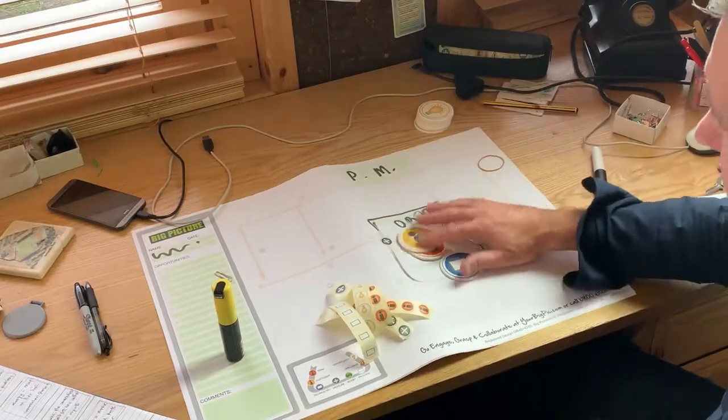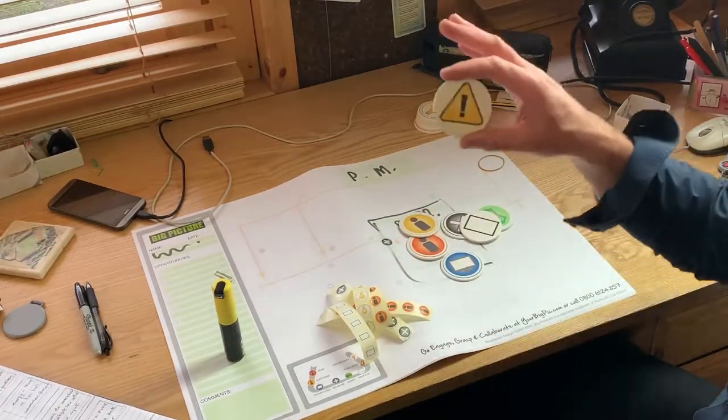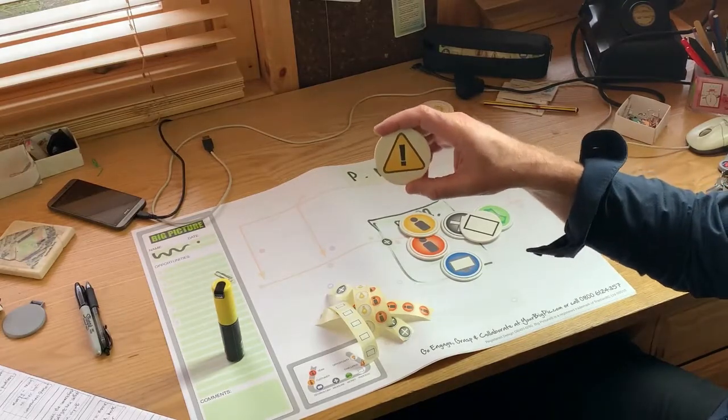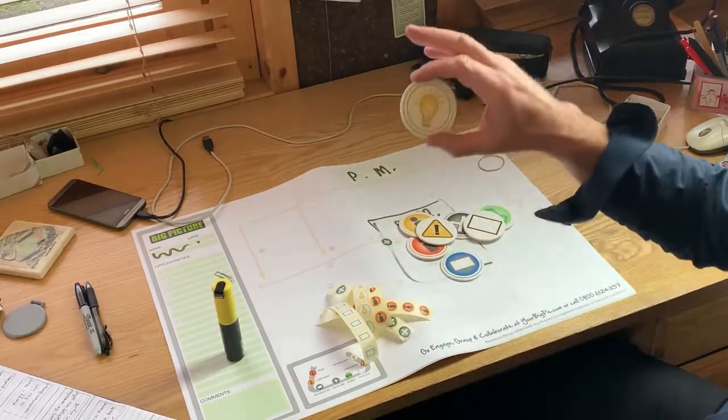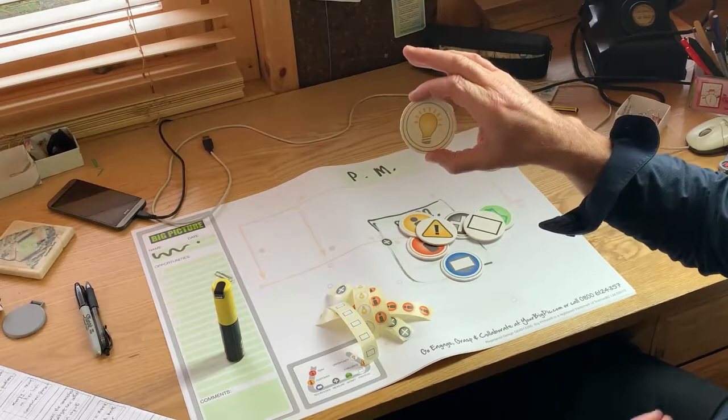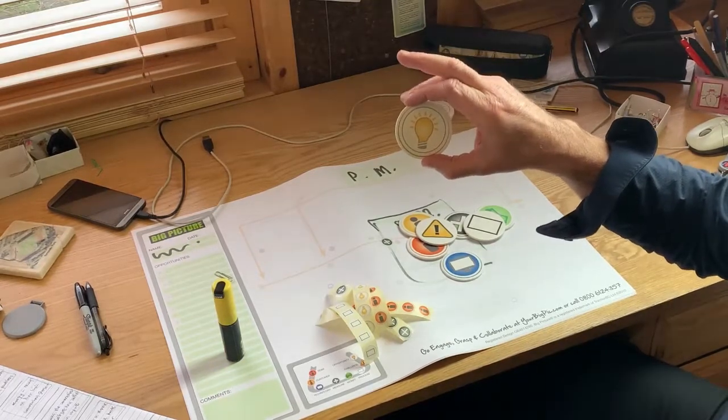And then once you've understood all of those, we've got the challenges in the business, this yellow hazard symbol. And what are the opportunities in the business, where are things going to get improved, what are you going to do as a result of the follow-on action.